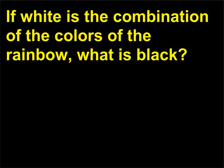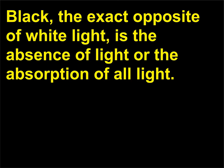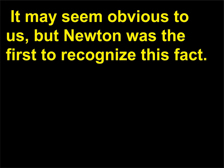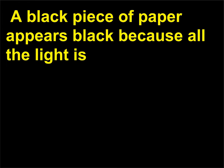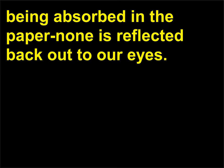If white is the combination of the colors of the rainbow, what is black? Black, the exact opposite of white light, is the absence of light or the absorption of all light. It may seem obvious to us, but Newton was the first to recognize this fact. A black piece of paper appears black because all the light is being absorbed in the paper, none is reflected back out to our eyes.